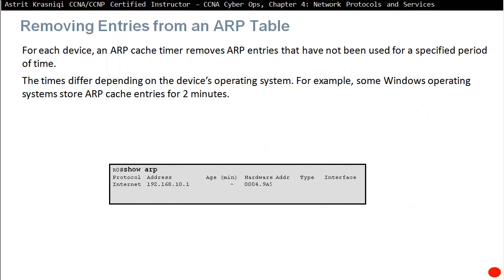When 192.168.1.7 sees that the IP address matches its own, it sends an ARP reply. Each device has an ARP cache timer that removes entries not used for a specific period — for example in Windows, every two minutes. Both end devices and intermediary devices maintain an ARP table. In a router you can run 'show arp' and see IP addresses resolved to their corresponding MAC addresses.